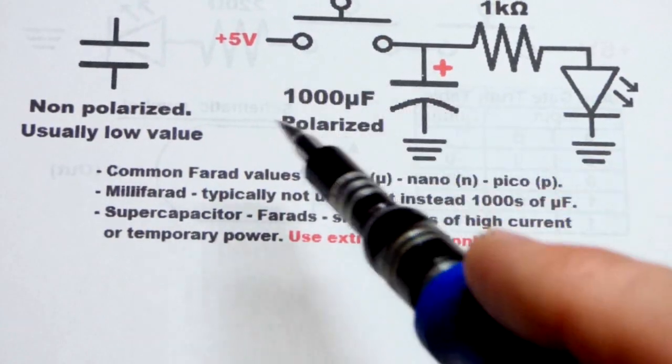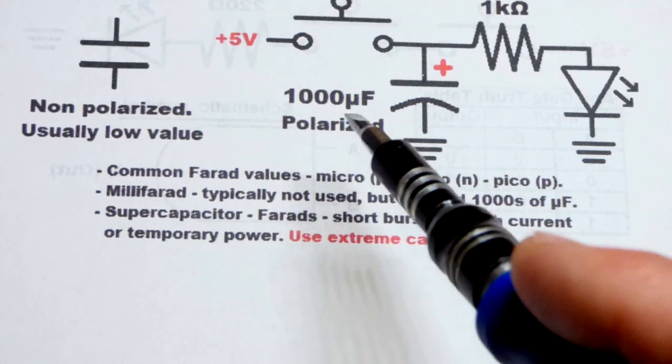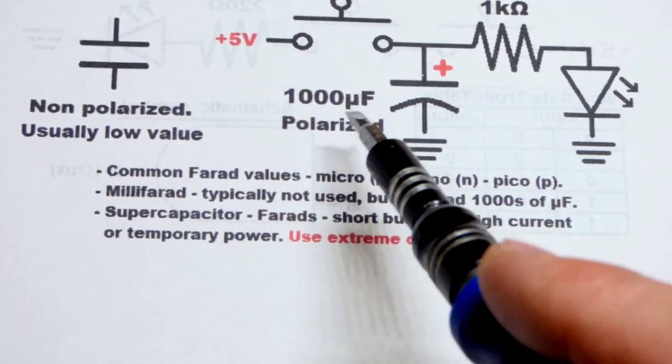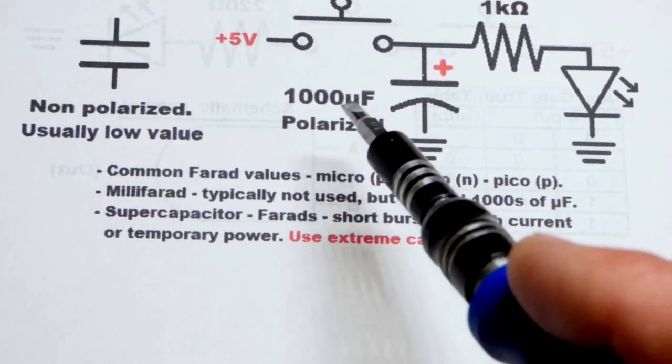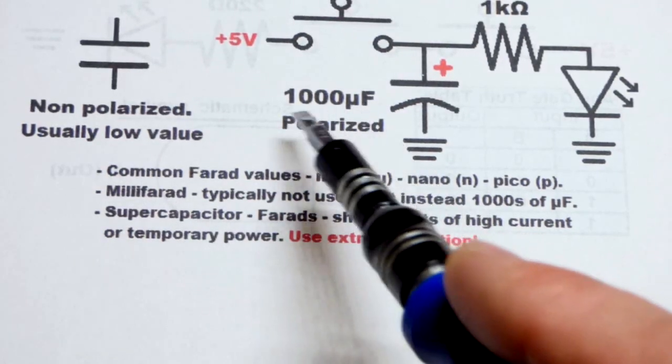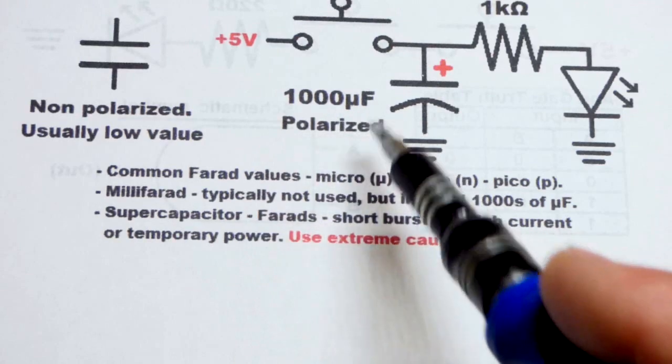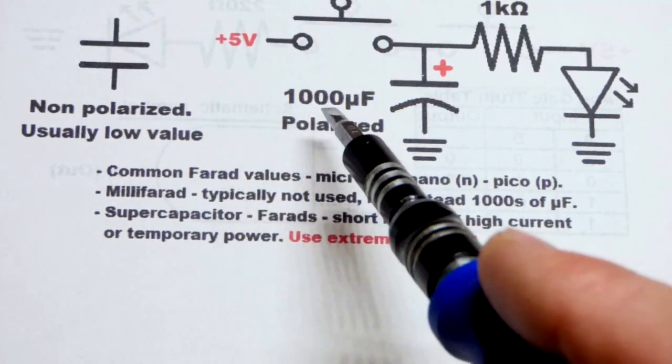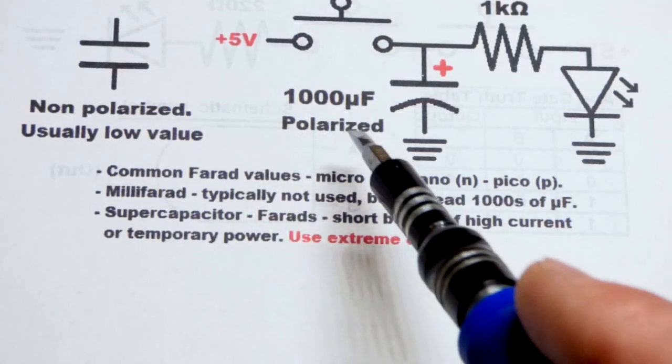Now you'll notice I have a thousand microfarad here. Capacitors don't usually show their values in millifarad. So microfarad is one one-thousandth of a millifarad, but instead of one millifarad we just have a thousand microfarad there. You might even see ten thousand microfarad capacitors.